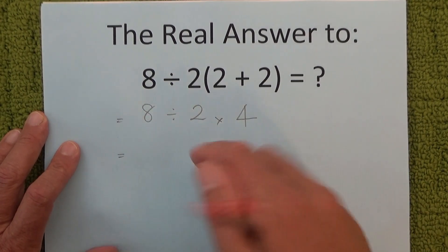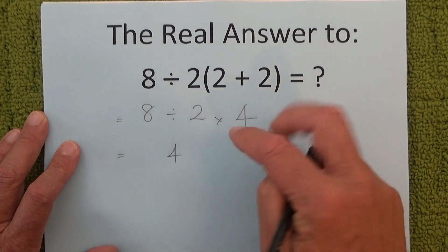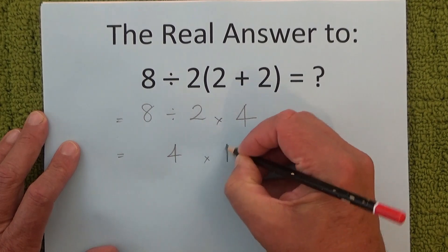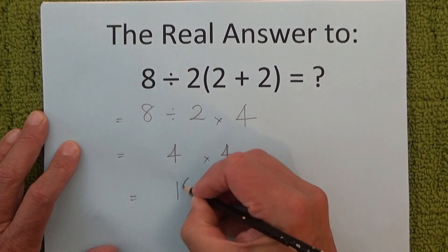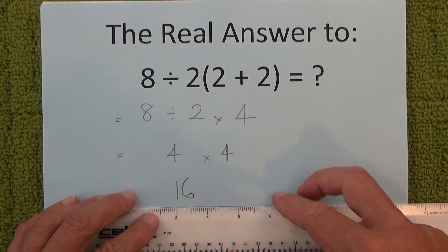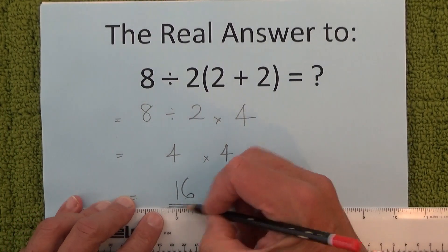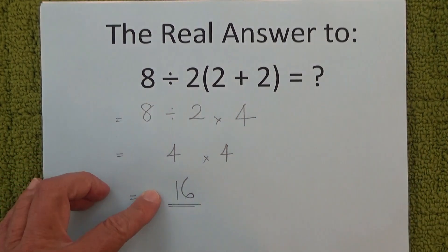So it's 8 divided by 2 which is 4 and we multiply that by 4 and then 4 times 4 equals 16. So there we go the correct answer to this equation is 16.